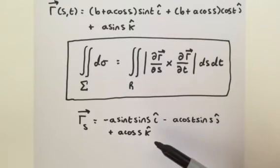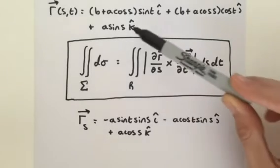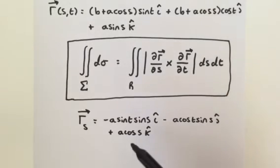And then it's very easy for our z component. We have no t variables, so therefore it becomes a cosine of s times k.